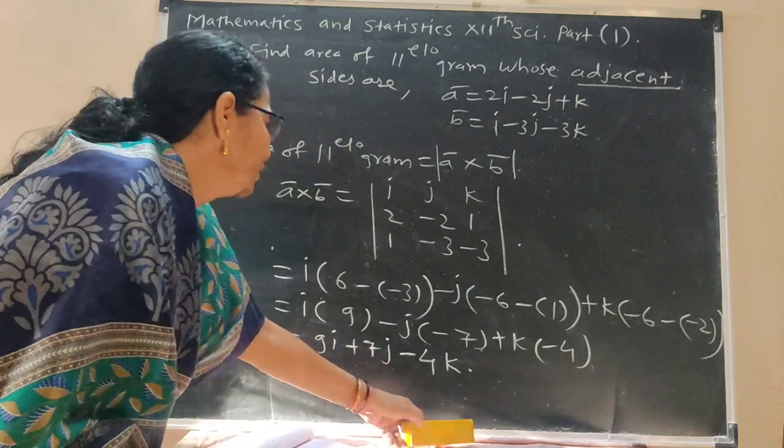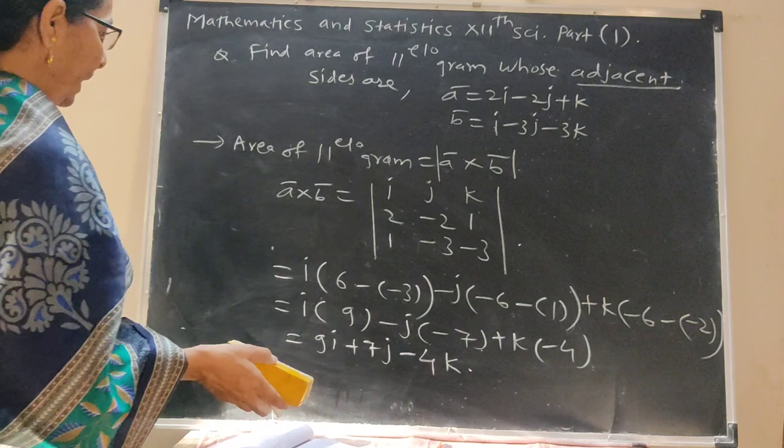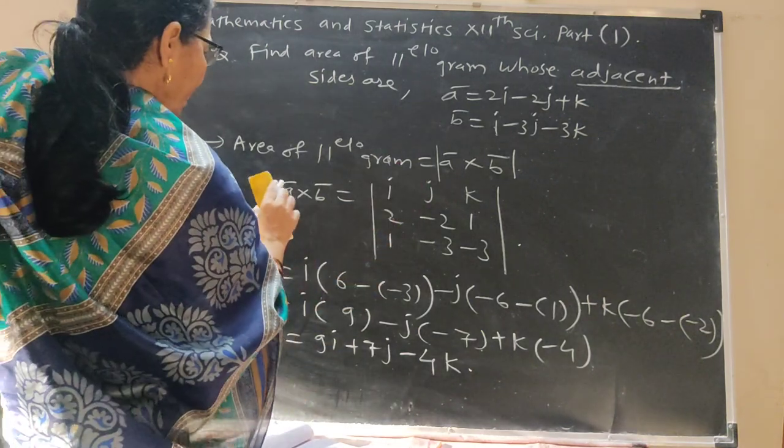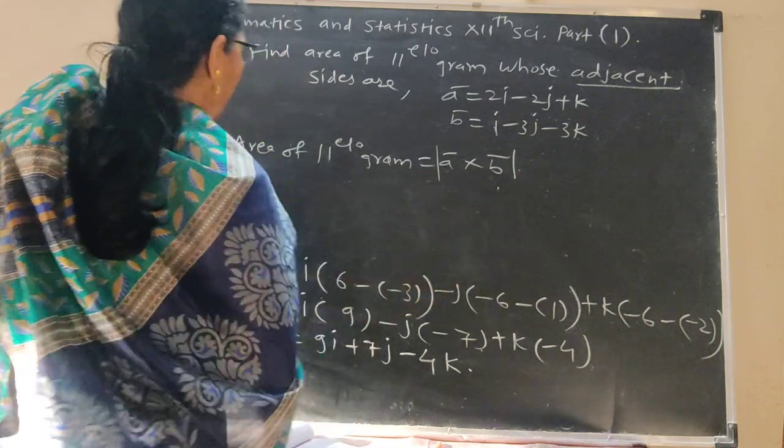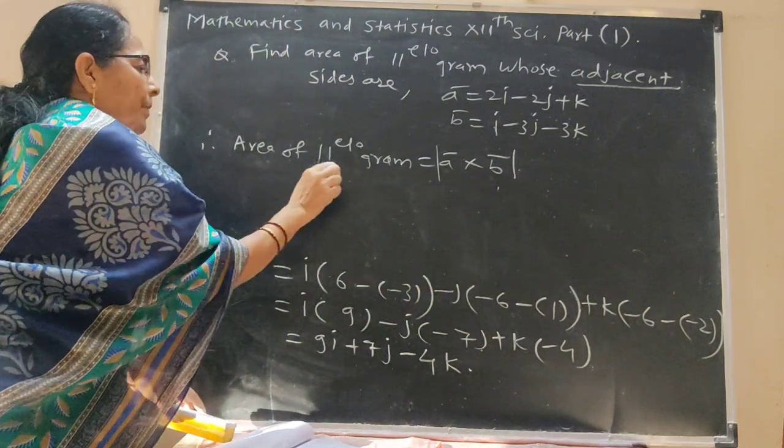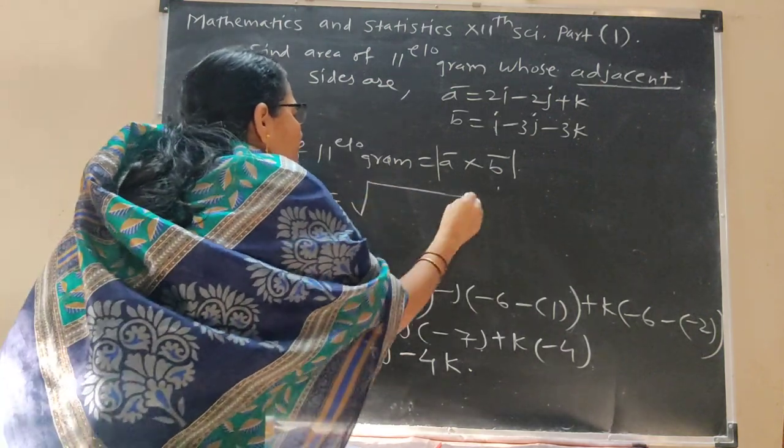And area of parallelogram is the magnitude. Therefore magnitude we have to find. Therefore, area of parallelogram, magnitude a bar cross b bar equals under root.